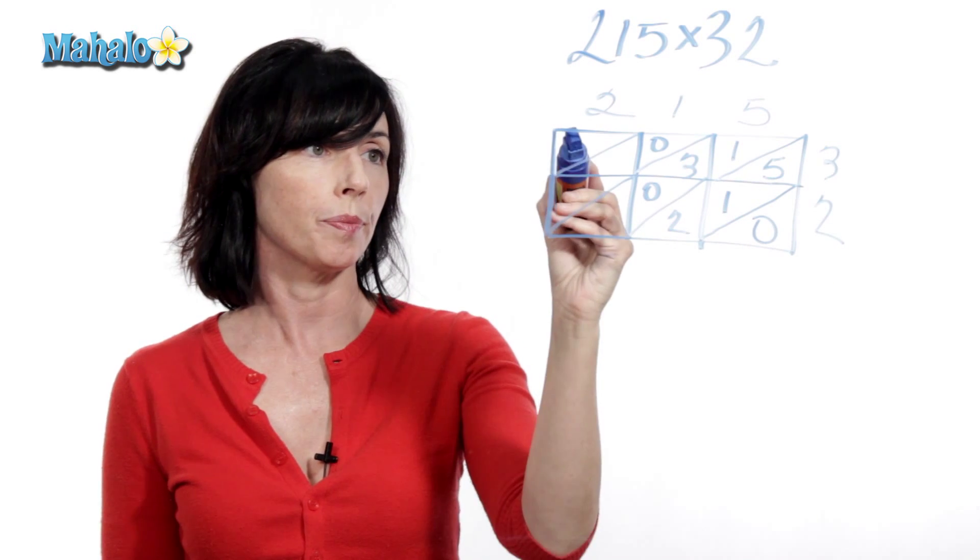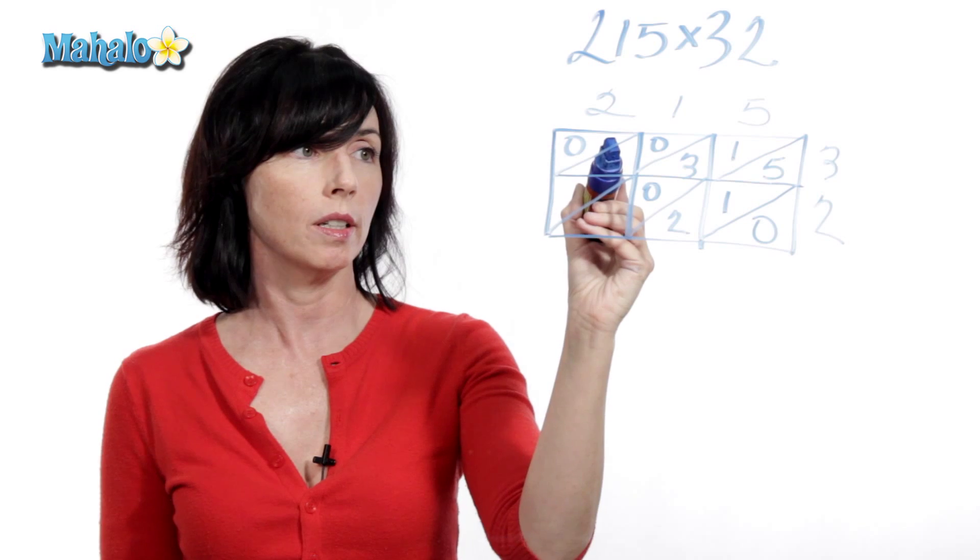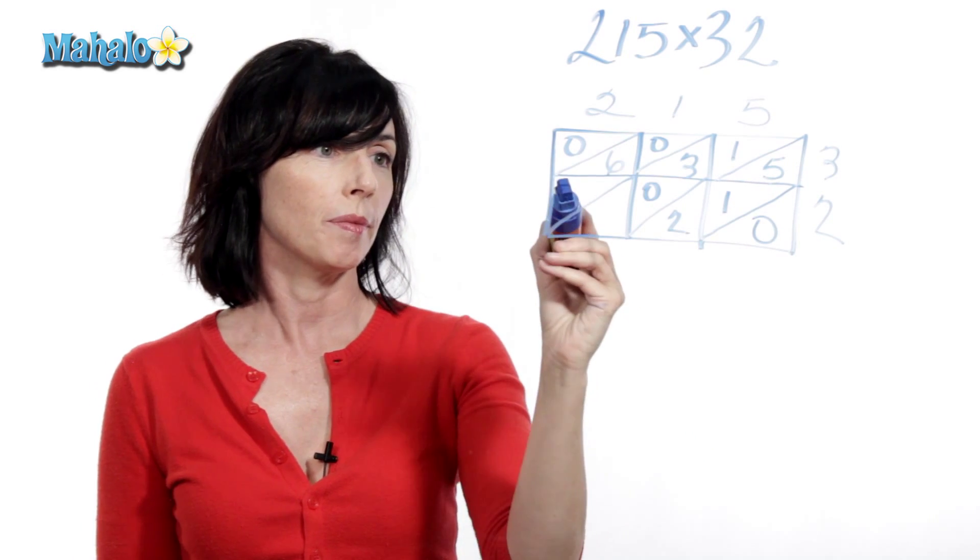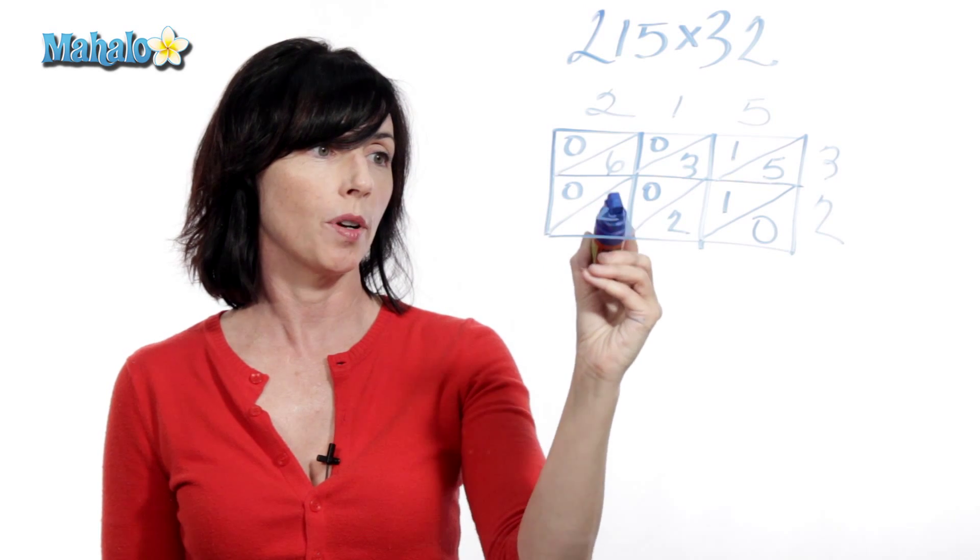2 times 3 is 6. 0 for my tens position, a 6 in my ones position. And 2 times 2 is 4. A 0 there and a 4 there.